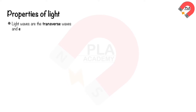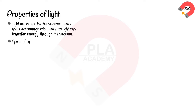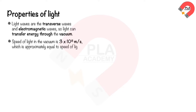General properties of light waves. Light waves are transverse waves and electromagnetic waves, so light can transfer energy through a vacuum. The speed of light in a vacuum is 3 × 10⁸ meters per second, which is approximately equal to the speed of light in air. Light travels in a straight line.